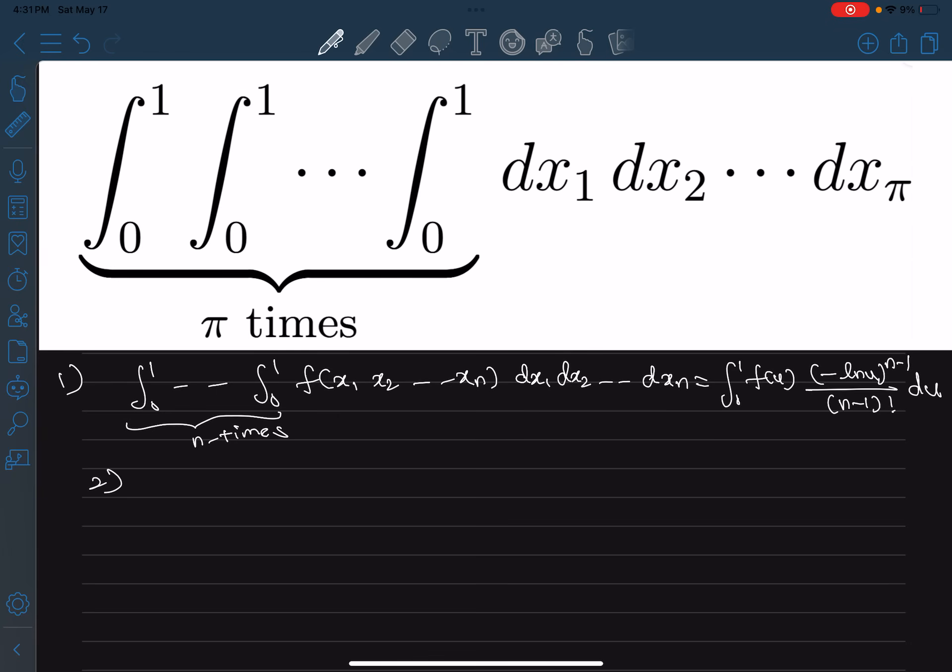Another formula that we derived earlier was that integral from 0 to 1 of ln to the power n of x times 1 minus ax dx was negative 1 to the power n times gamma of n plus 1 by a times li_{n+1} of a.